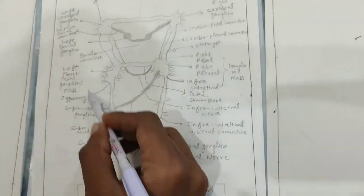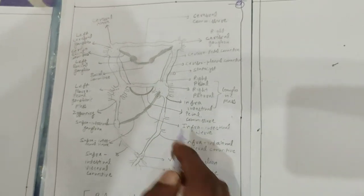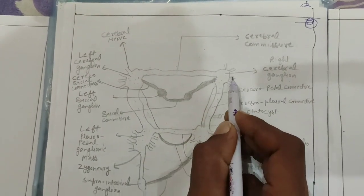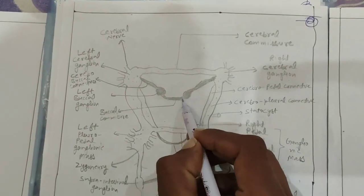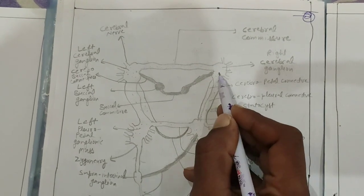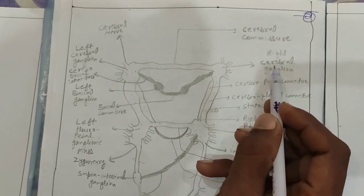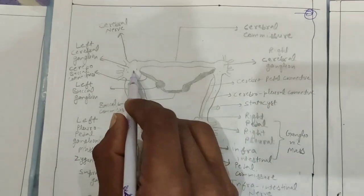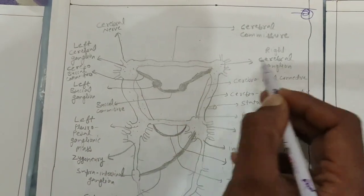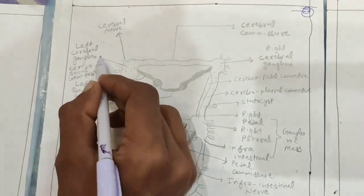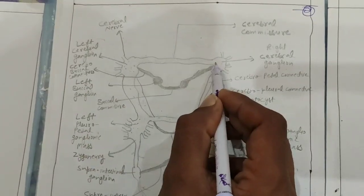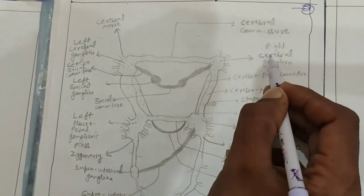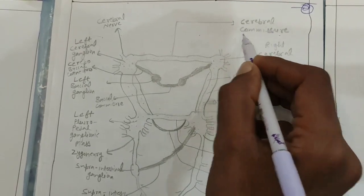This is the structure of the nervous system of Pila globosa. Pila globosa contains two cerebral ganglia, which are present above the buccal ganglion. These cerebral ganglia are triangular in shape. The right cerebral ganglion and left cerebral ganglion are the same type of ganglion, so they are attached with the help of commissures — named as cerebral commissures.